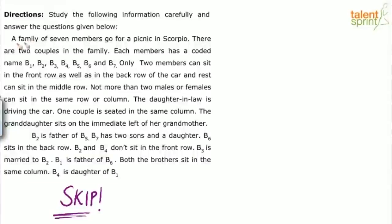The data says a family of 7 members goes for a picnic in a Scorpio. So total 7 members in the family — there are 2 couples in the family and 3 are independent members.